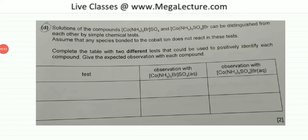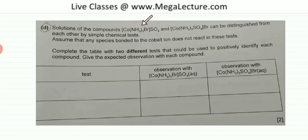The question gives two cobalt compounds. The first is a complex ion with 5 NH3 and 1 Br, with an SO4 ion attached to it. The second is cobalt with 5 NH3 and an SO4 directly attached, and a Br attached to it as well.